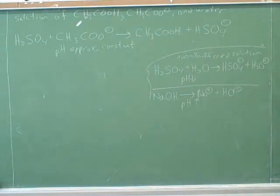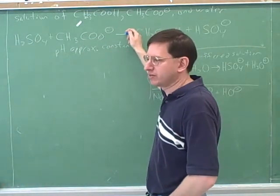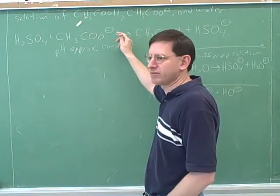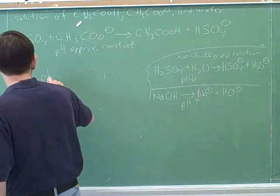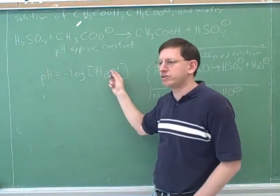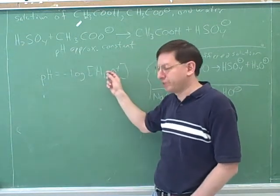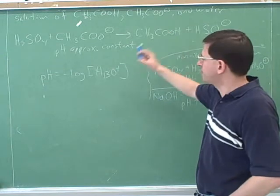Student: I understand the reaction of sulfuric acid with water and how the pH goes down, but in the buffered case the pH remains constant. Instructor: Right. That reaction still goes to completion — that's why there's no equilibrium arrow. But is this reaction producing any hydronium? No. So even though it goes to completion, it's not producing any hydronium, and therefore we would not expect the pH to change. pH is just the negative log of the hydronium concentration — the only way to change it is to produce or remove hydronium.